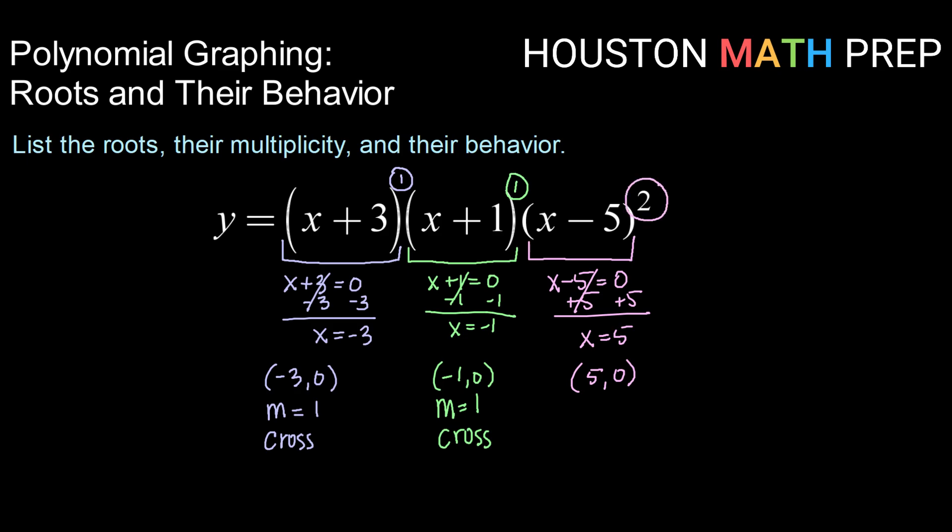Checking for our power, that's our multiplicity, this time we have a multiplicity of 2. And since we have an even multiplicity, that will give us touch behavior. So at x equals 5, our graph will just come and touch the x-axis and bounce back.